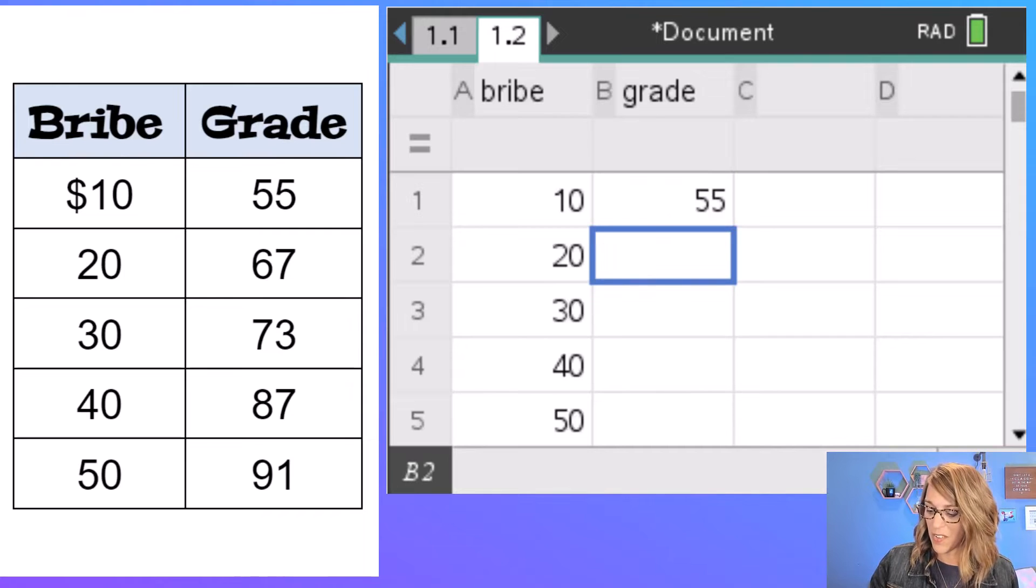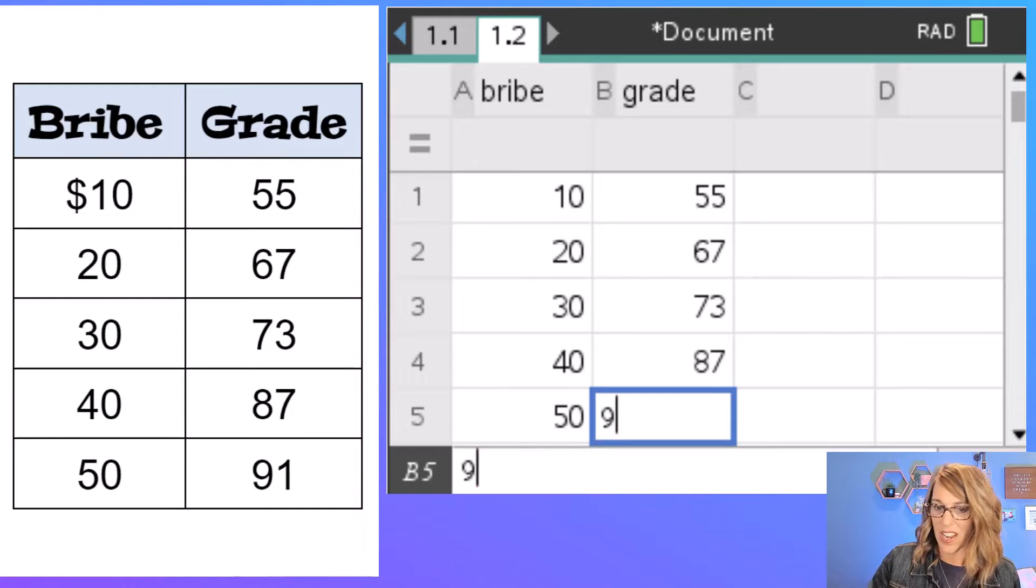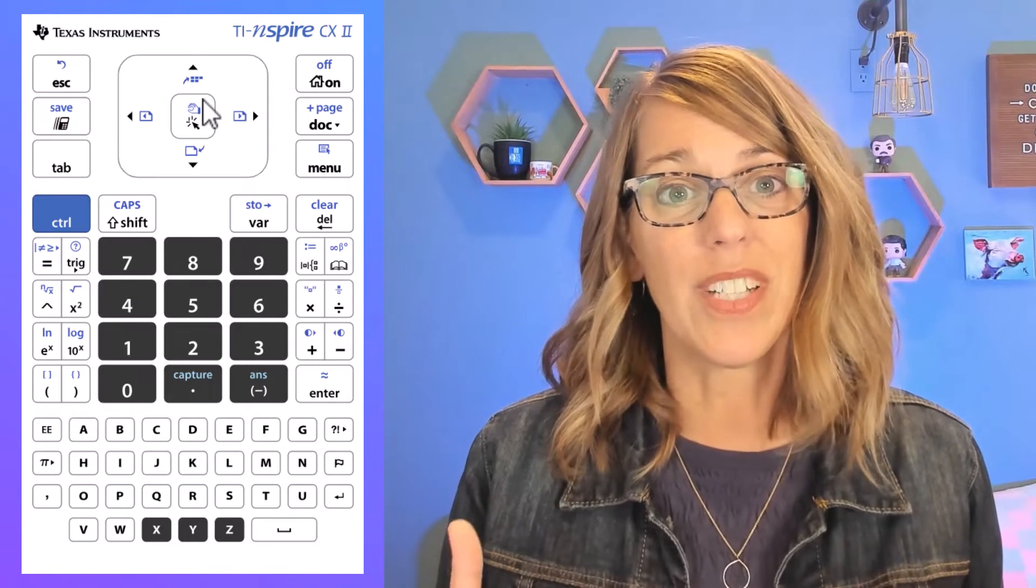And then we have the grades that go along with each of those. So arrowing up to that first entry cell for grade we've got a grade of 55, another grade of 67, and then 73, 87, and 91, enter.